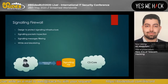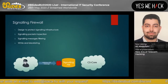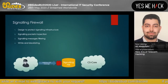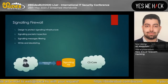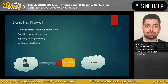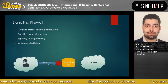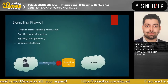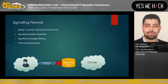Signaling Firewall: mobile operators use a signaling firewall to protect their signaling infrastructure through packet inspection and filtering via blacklisting.